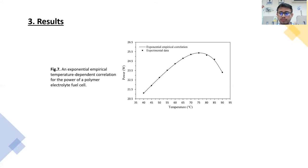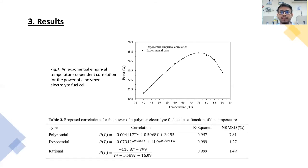Finally, in table 2, it shows some possible correlations to predict the power output as a function of the temperature. The best fit model was the exponential with an R-square of 0.99 and a normalized root-mean-square deviation of 1.27%.